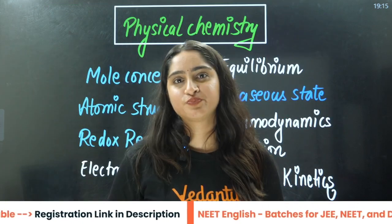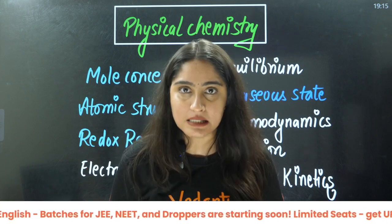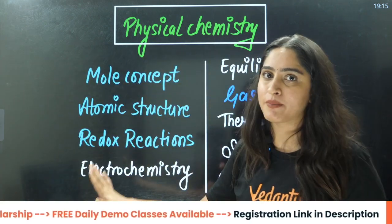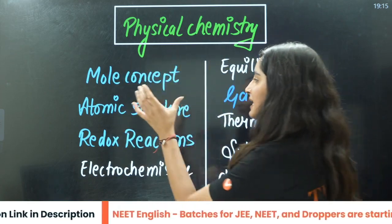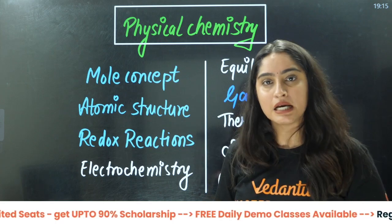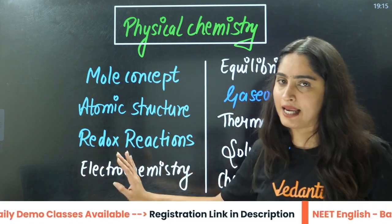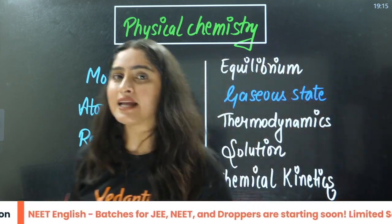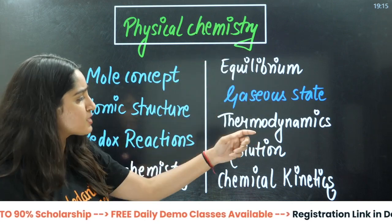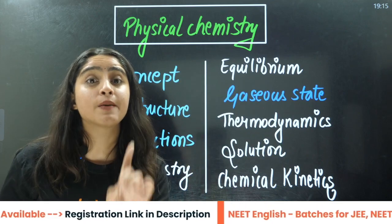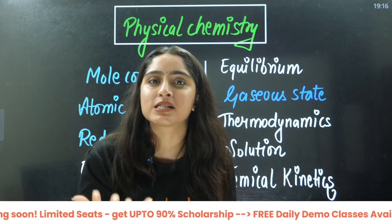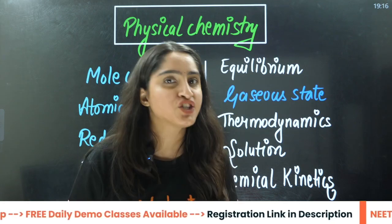The second question is: how should we proceed through the chapters? For physical chemistry, the chapters written in blue are the base. First is Mole Concept, second is Atomic Structure, third is Redox Reactions — you must know these three chapters before starting chemistry. After Redox Reaction, you can start Electrochemistry since they are related. After these four chapters, you can do Equilibrium, Thermodynamics, Solutions, or Chemical Kinetics. When starting Thermodynamics, you must know what Gaseous State is, even if it's not in your syllabus.